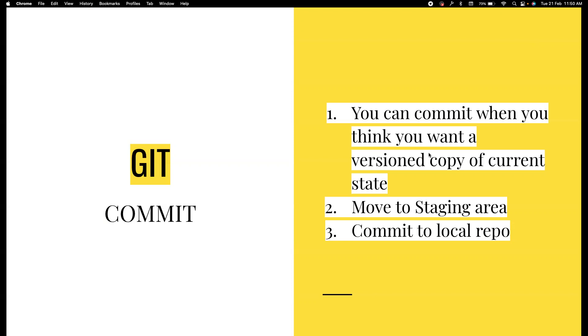When you have a need to version your code, please make a commit. In order to do a commit, you have to do two things: one, you have to move the file to the staging area, and two, you have to commit to the local repository.